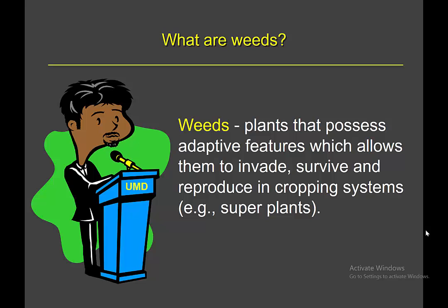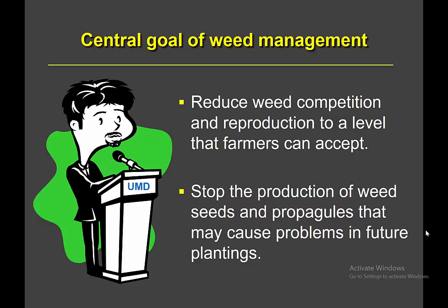Weeds are plants that possess adapted features which allow them to thrive and reproduce in the crop. The most important part of this definition is 'adapted feature.' The old school definition was a weed is a plant out of place — if you have a corn plant in a soybean field, that corn is a weed. I tend to disagree. Corn in a soybean field is a mistake, an accident — it didn't invade that field, it was put there as leftover from a previous crop.